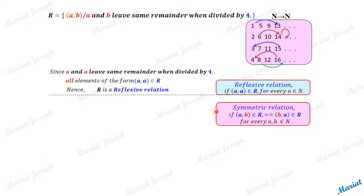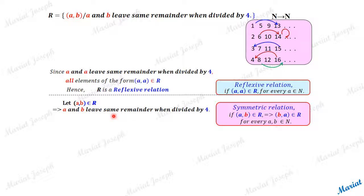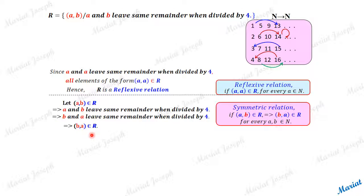Is it a symmetric relation? If (a, b) is in the relation, that means a and b leave the same remainder when divided by 4. This implies b and a also leave the same remainder when divided by 4, so the pair (b, a) will also be in the relation. Therefore the relation is a symmetric relation — we have logically proved that whenever (a, b) belongs to R, (b, a) also belongs to R.